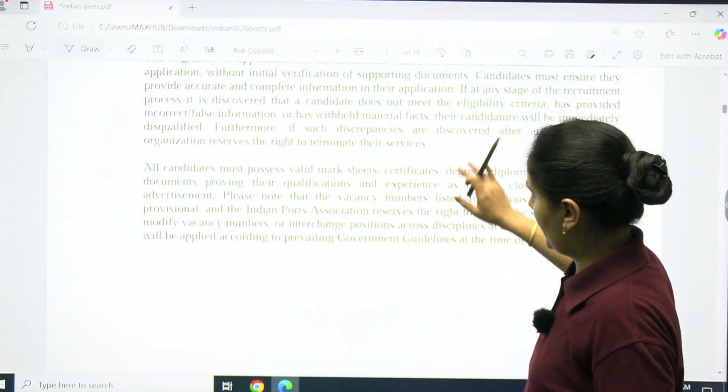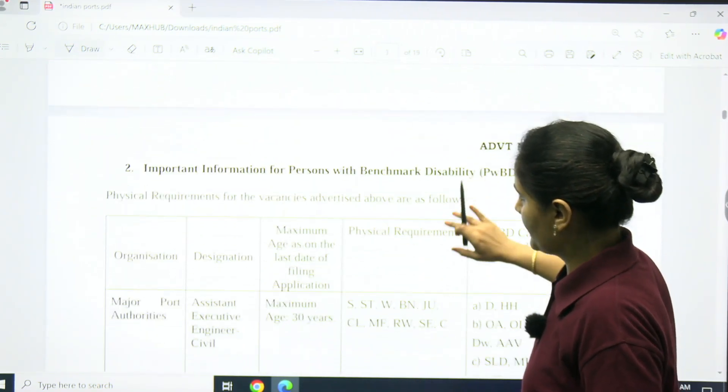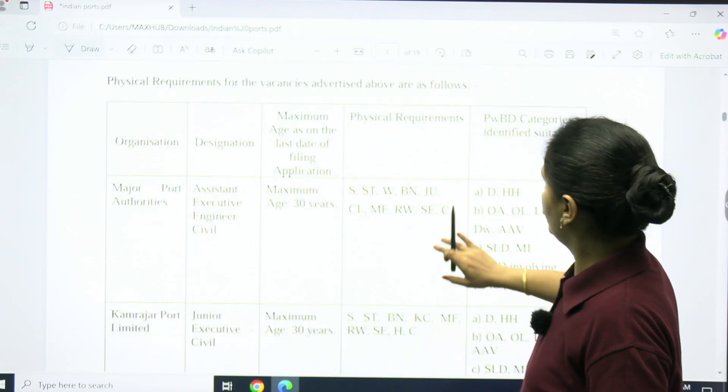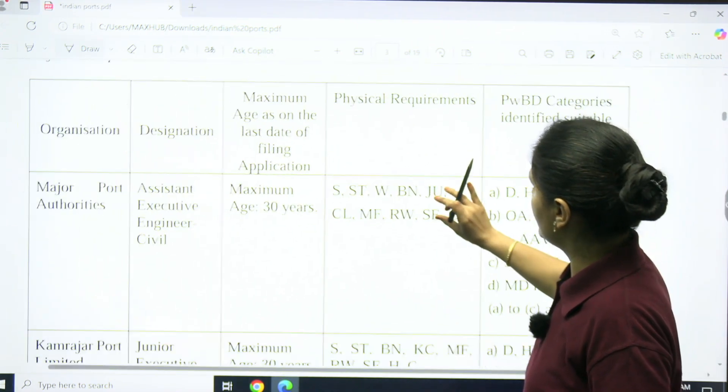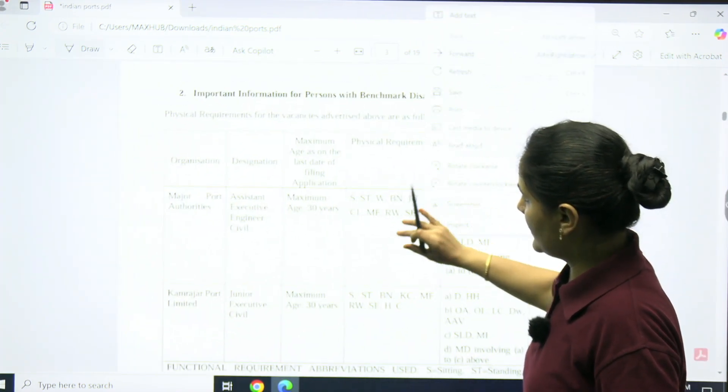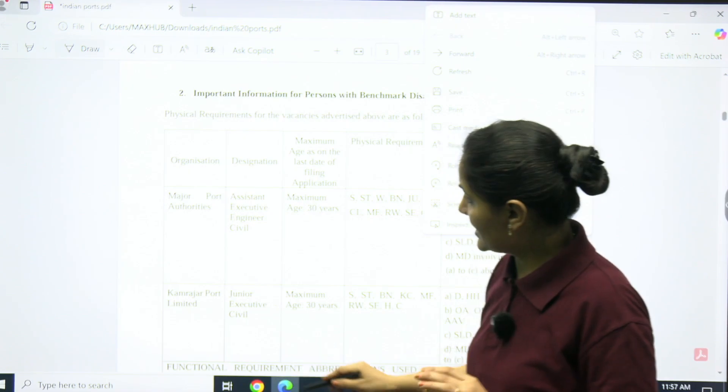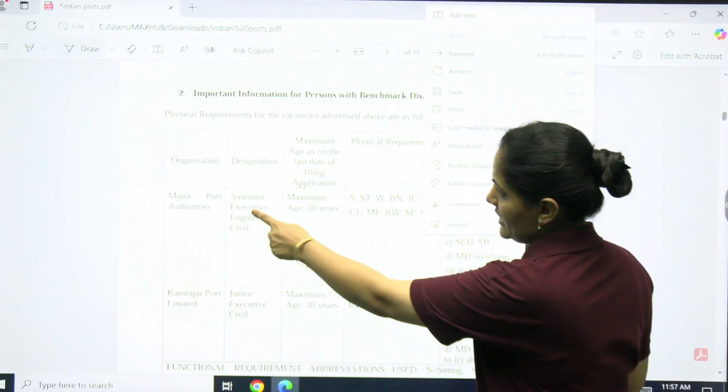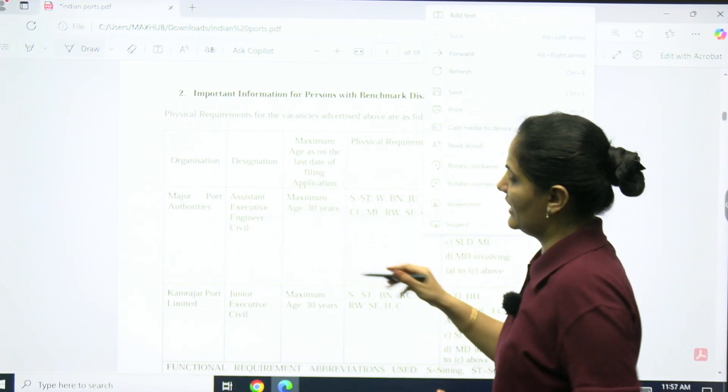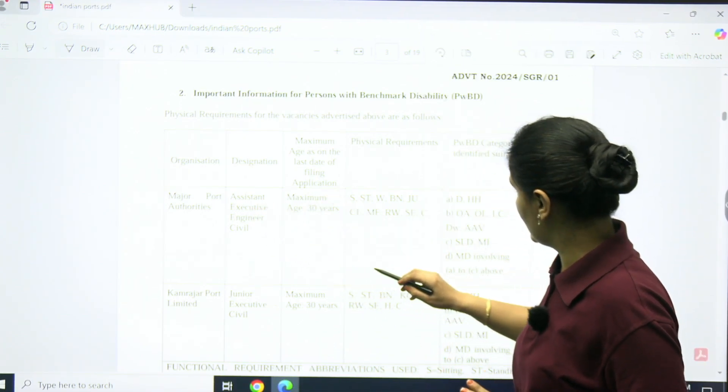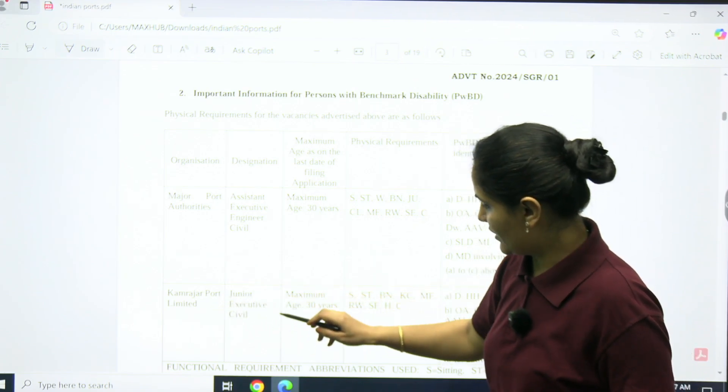Age limit is mentioned according to the ports. Major Ports Authority maximum age limit is 30 years for Assistant Executive Engineer. For Junior Executive Engineer, maximum age limit is also 30 years.